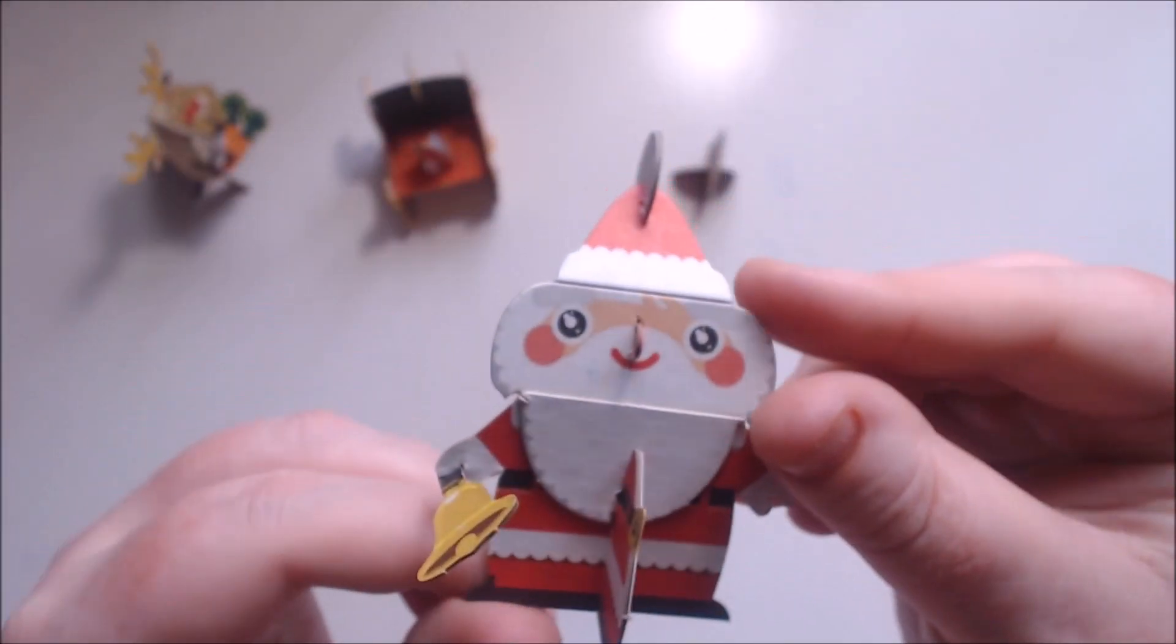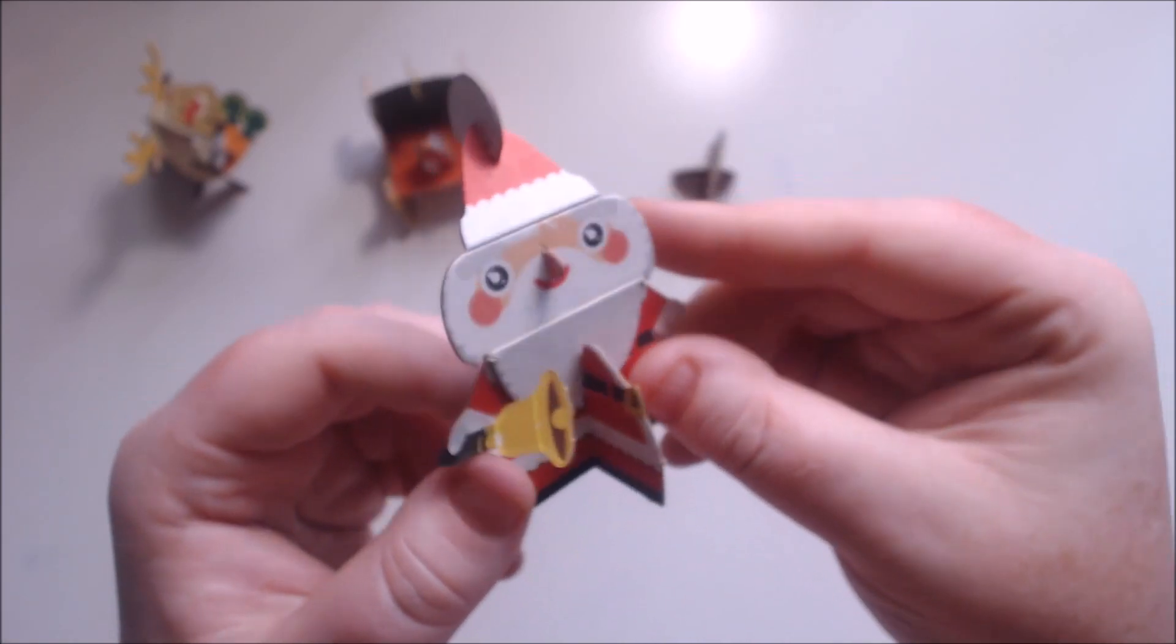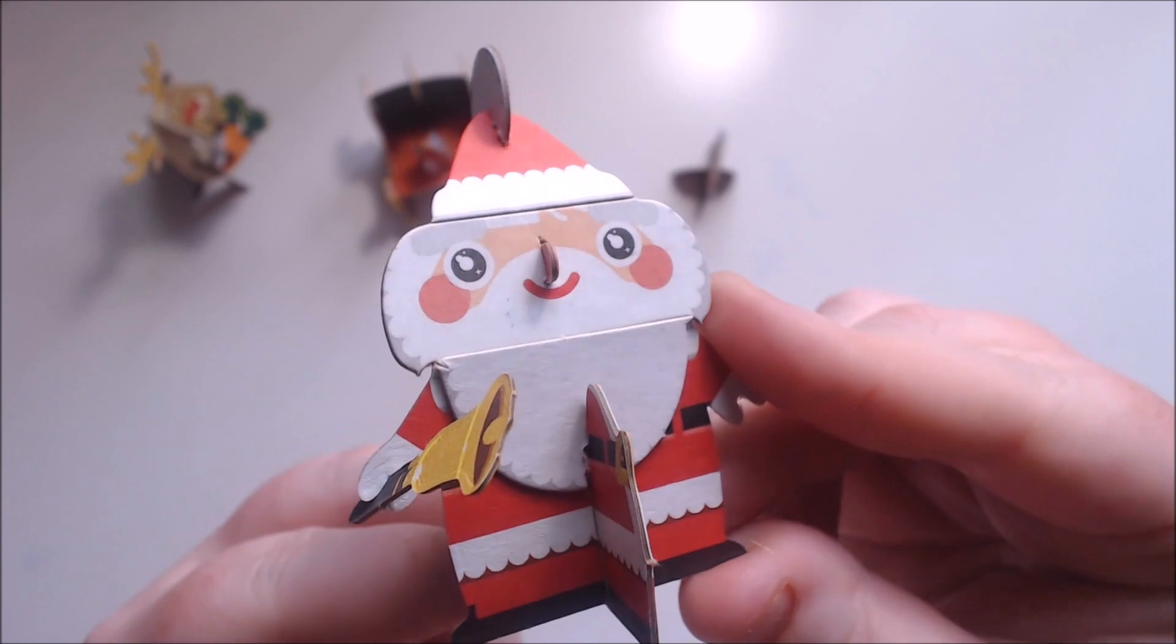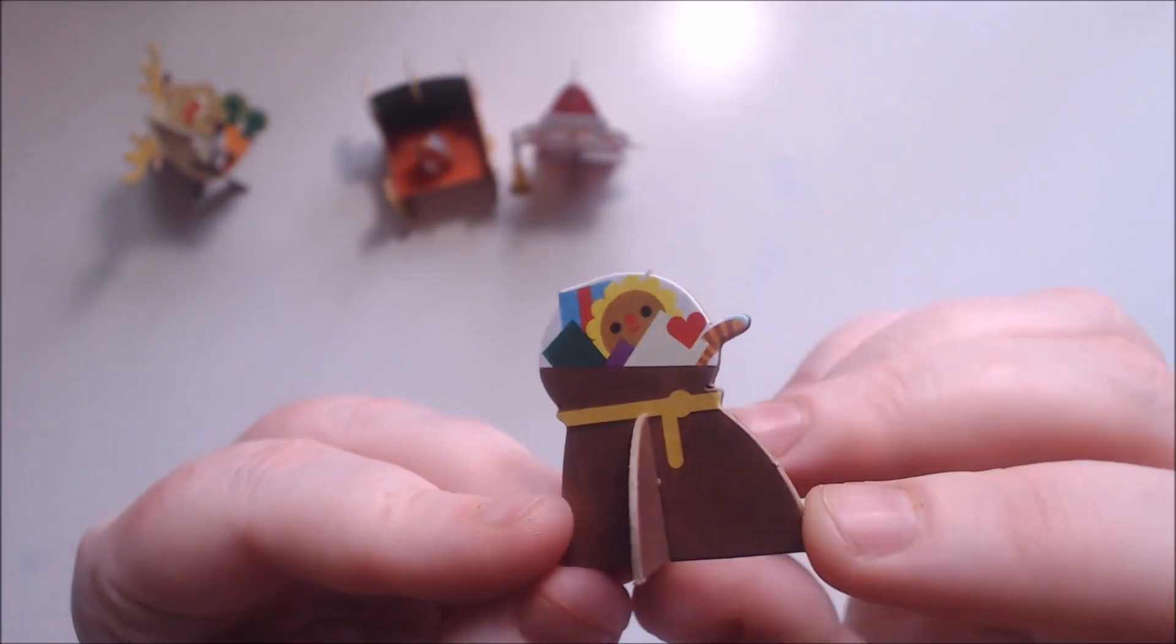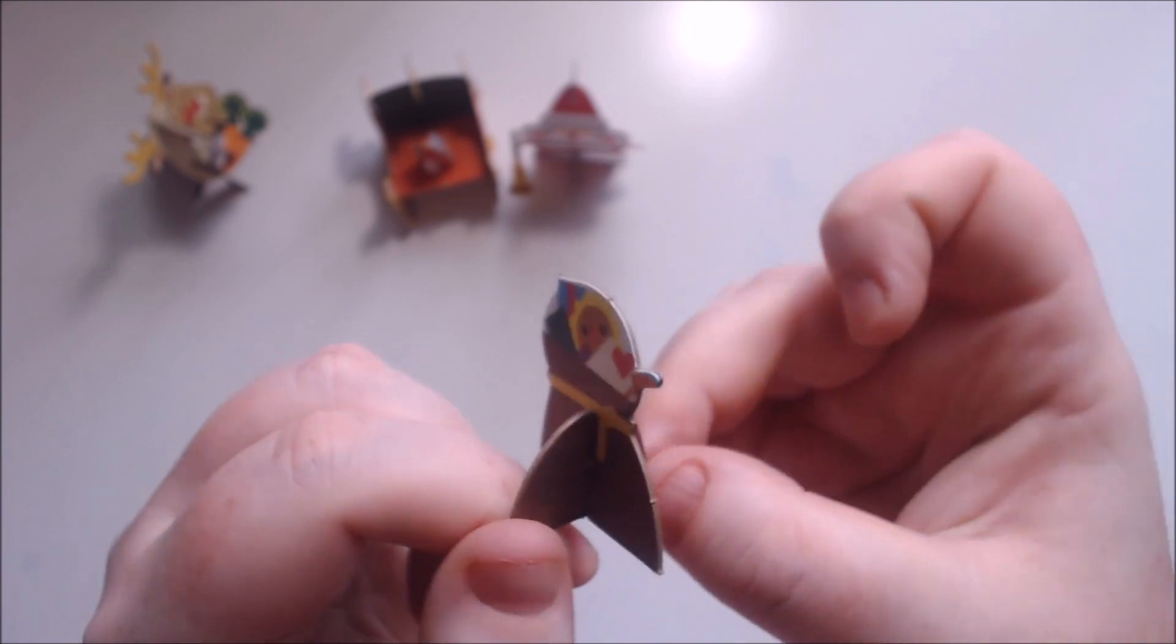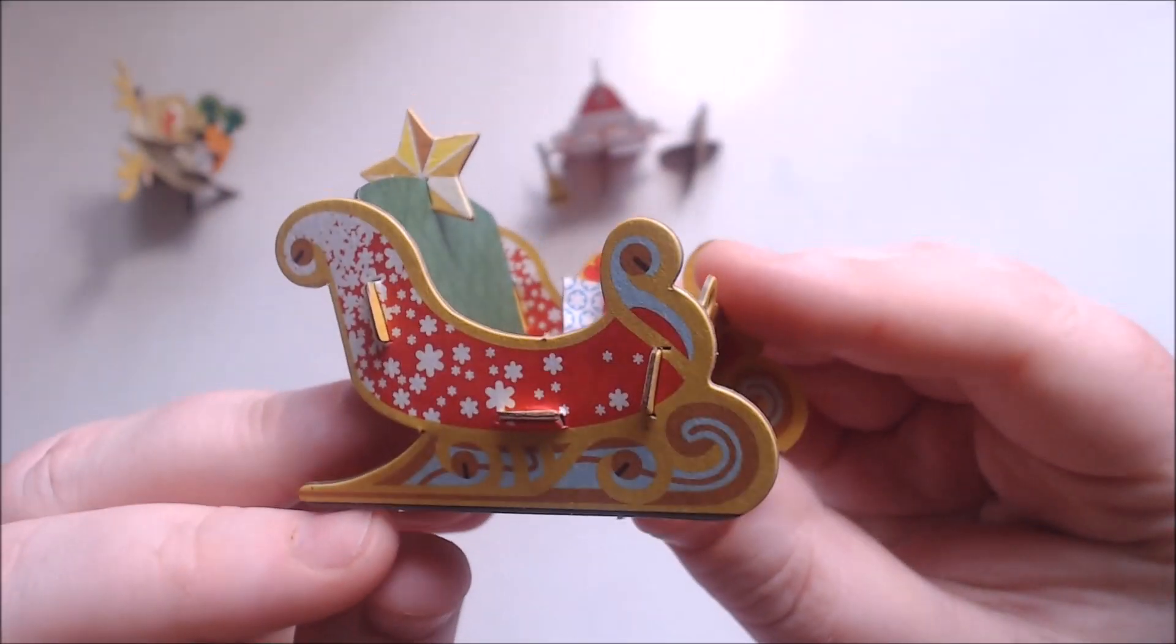And he looks super cute eating his little carrots. Let's have a look at Santa and his bell. As you can see, he finally did go together quite well, and his little hat sort of bends backwards so it looks like he's moving in the breeze. And there's his little sack of toys. She's really super sweet.